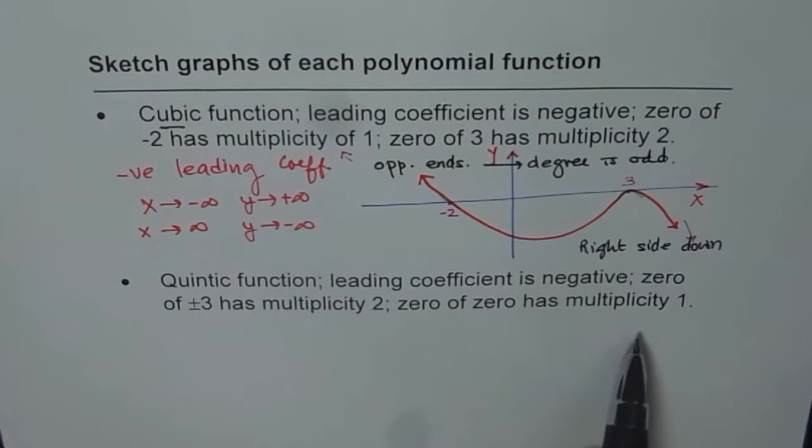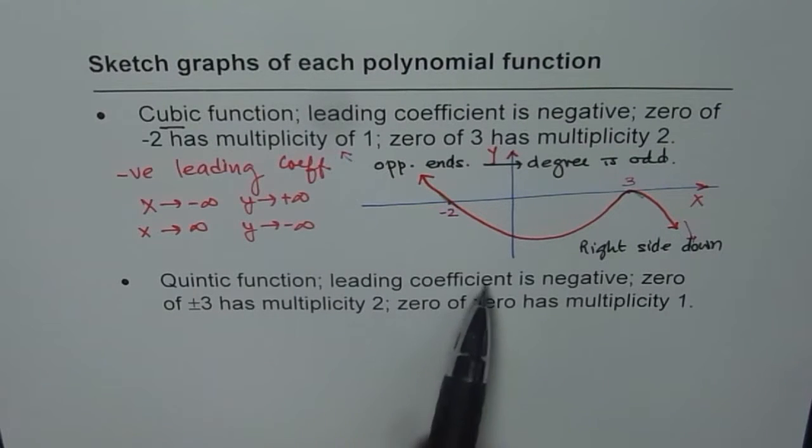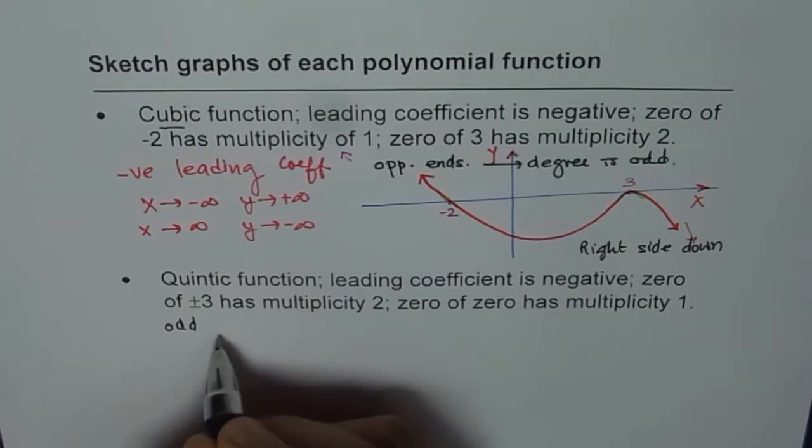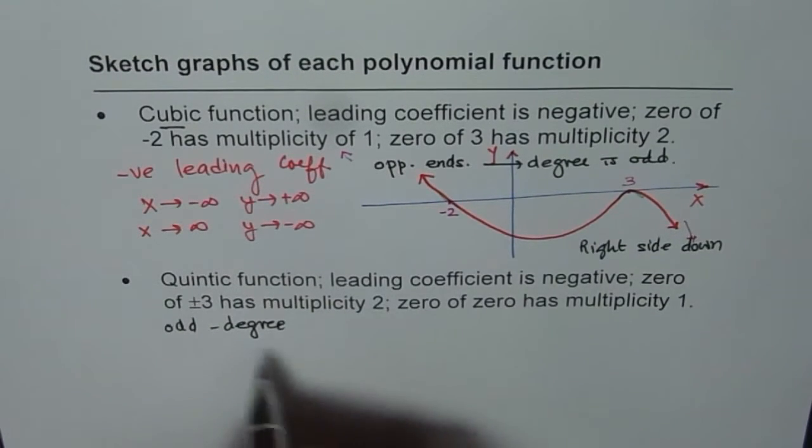So another example, very similar to one we have. It says quintic function, leading coefficient is negative. Quintic is odd degree. Leading coefficient negative means,